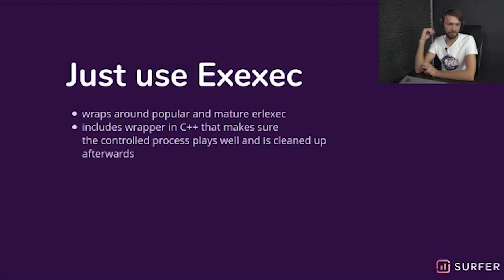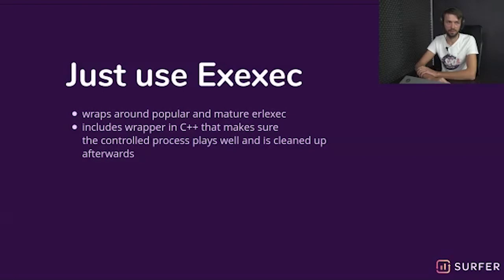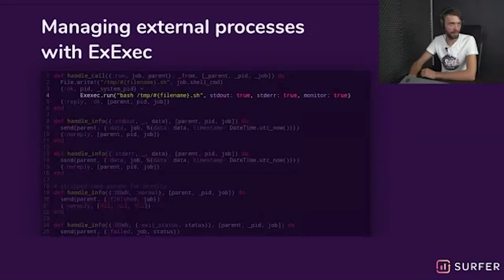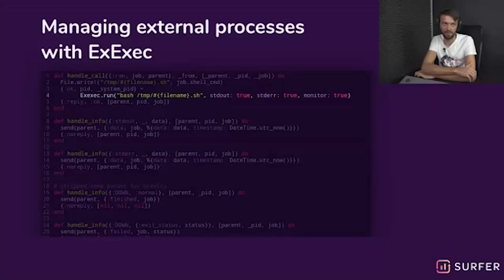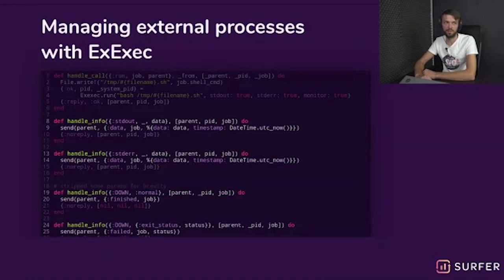With ex_exec, communication patterns are easier and you're always sure the process gets cleaned up after you exit the BEAM process. If you need to spawn an external process in Elixir, you might skip Ports and use ex_exec — it's way more reliable and it's a slim library. If you can compile native C++ code in your environment, it's really the best way to run external processes. The API is also very simple and similar to Ports: you call ex_exec.run with any process, in our case a bash script containing the job commands, and tell it to receive stdout, stderr, and monitor the exit status — those messages get sent to your parent process.